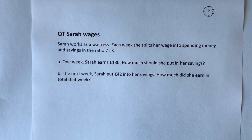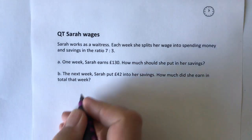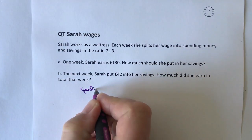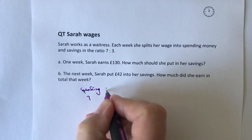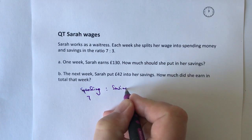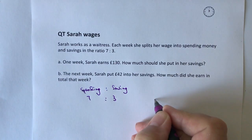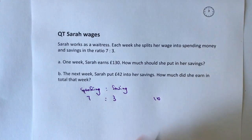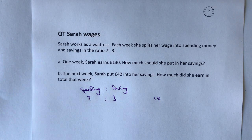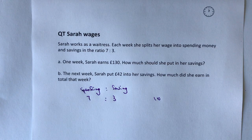So let's just have a look at that for a moment. On the basis of that information we've got spending, which is going to be seven, and we've got saving, which is going to be three. So in other words, if she earned ten pounds in one week she would spend seven pounds of it and she would save three pounds of it.